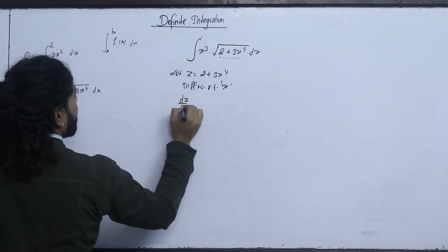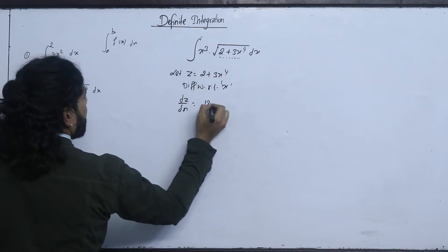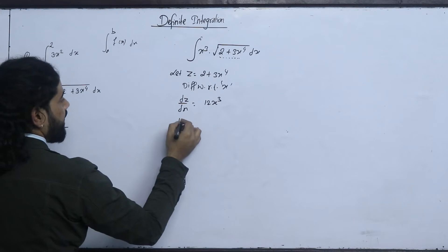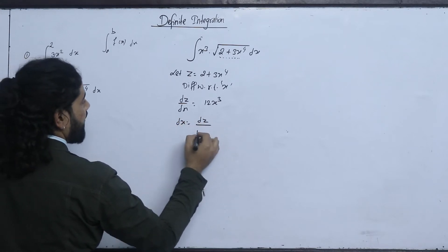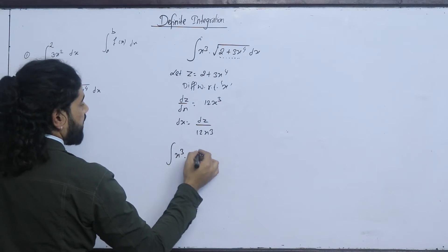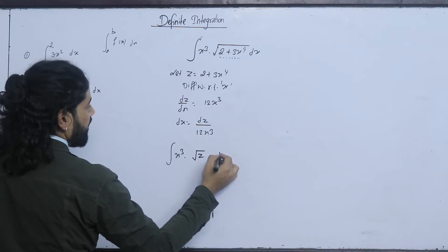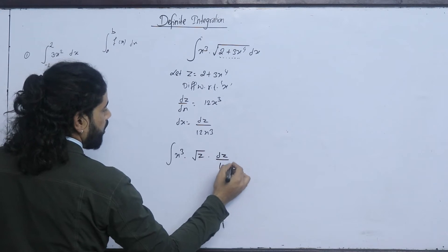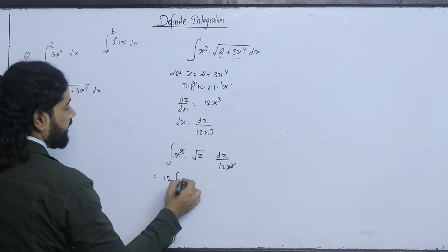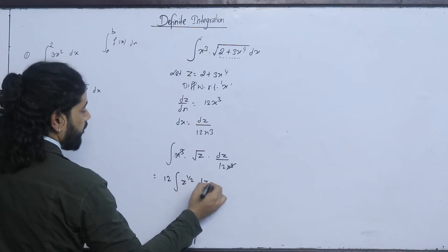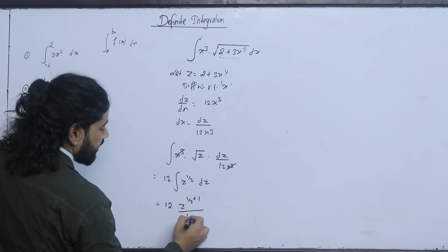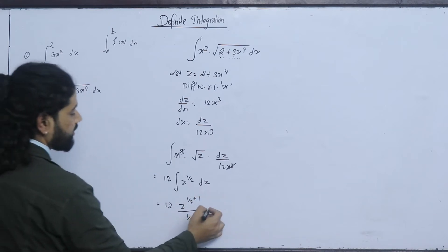Let z = 2 + 3x⁴. So dz = 12x³ dx, giving x³ dx = dz/12. The x³ and x³ cancel. We get the integral of √z times (1/12) dz, which is (1/12) ∫z^(1/2) dz. Integrating gives (1/12) times z^(3/2) divided by (3/2), plus c.